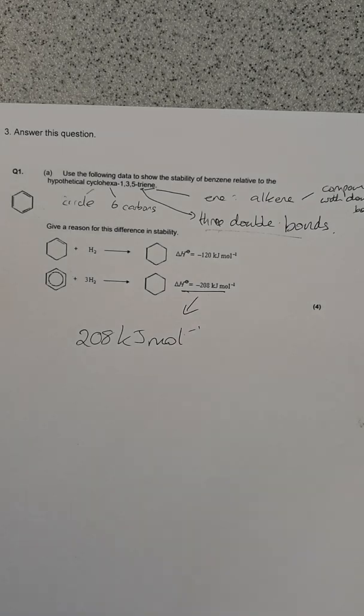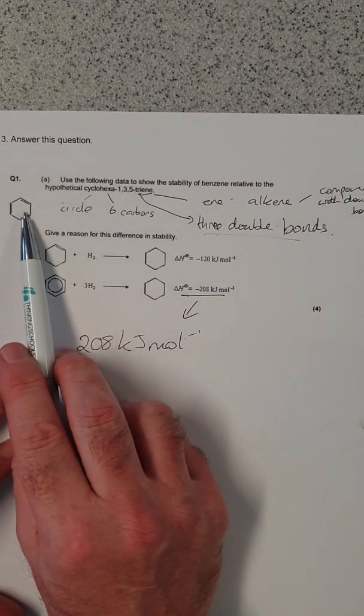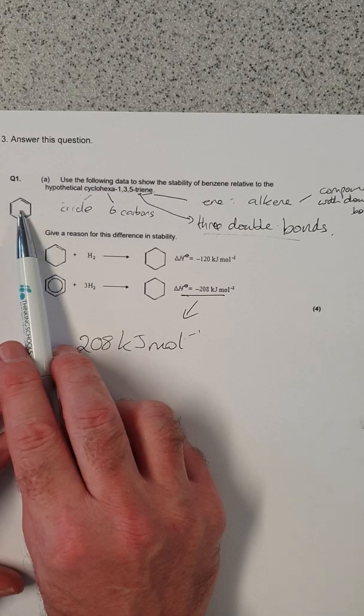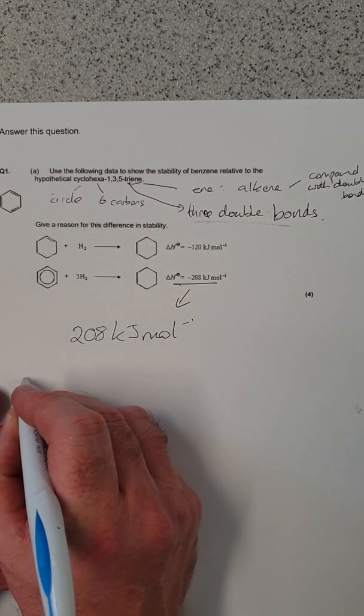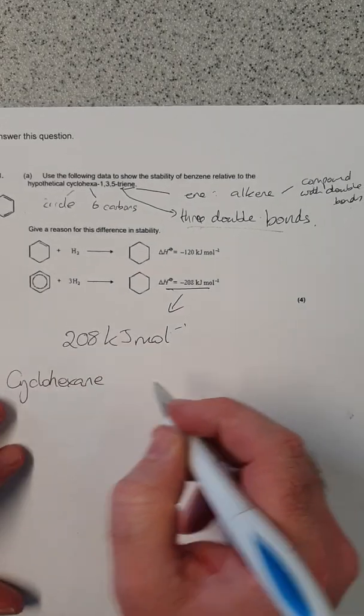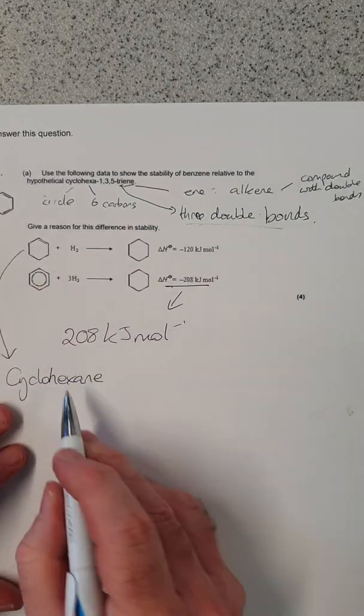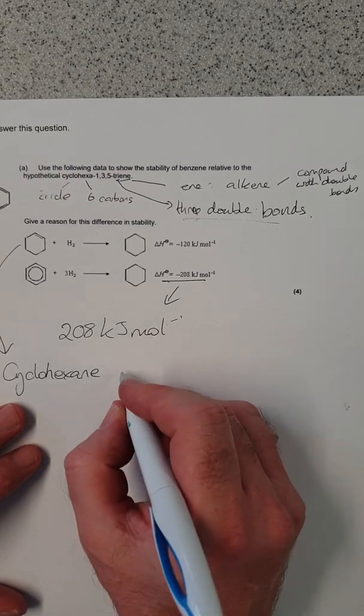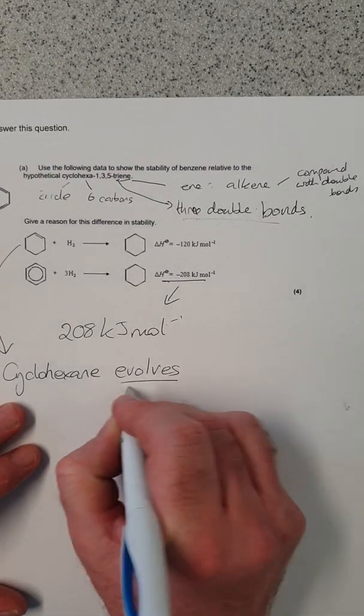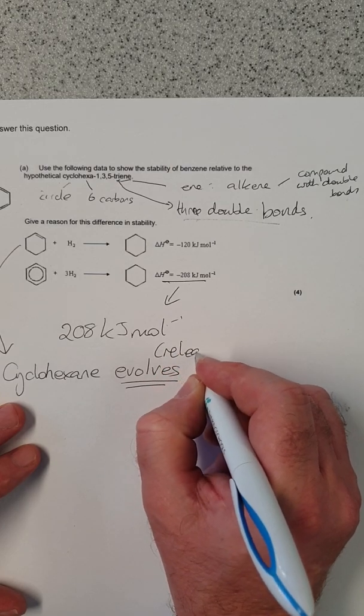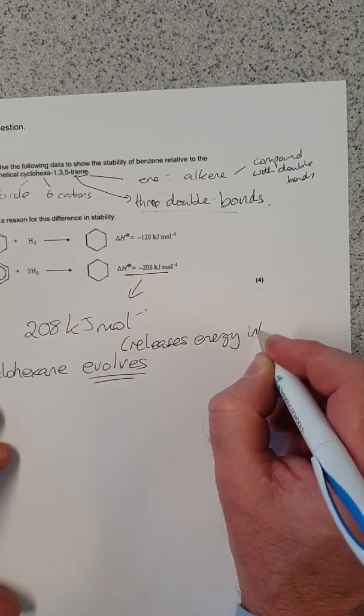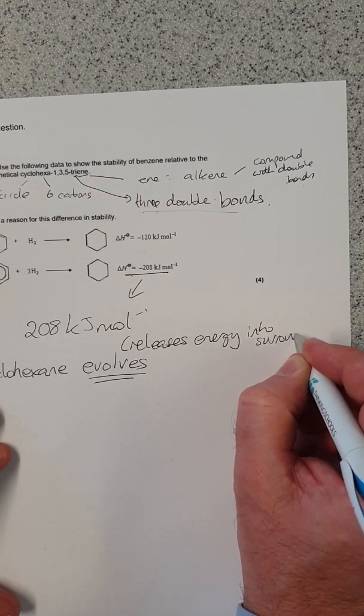So the question is, how much energy would we expect it to release for this molecule? So, cyclohexene, and cyclohexene is this molecule with one double bond. That evolves, evolves in this case, just means releases energy into the surroundings. That's all that that word means.